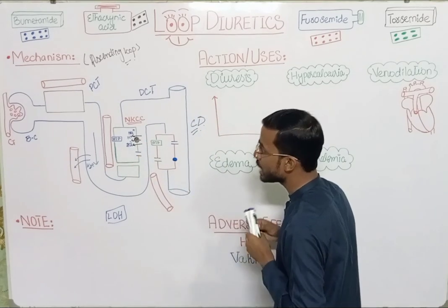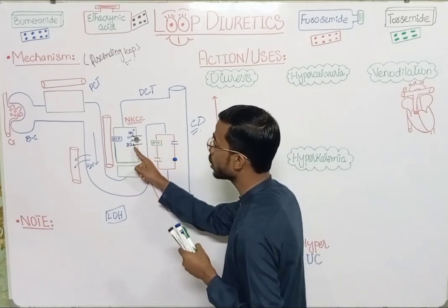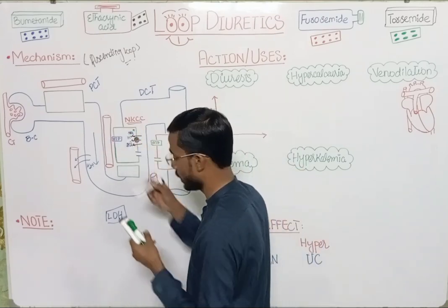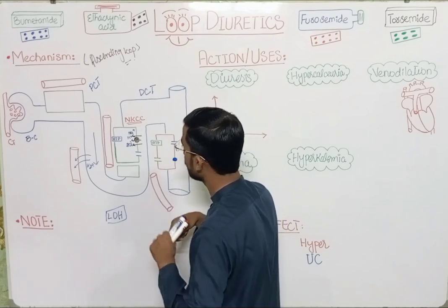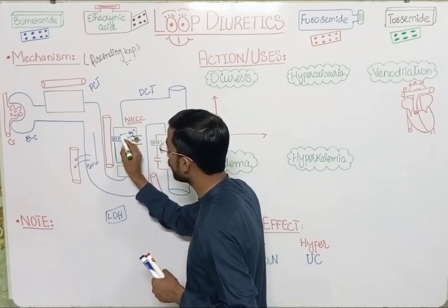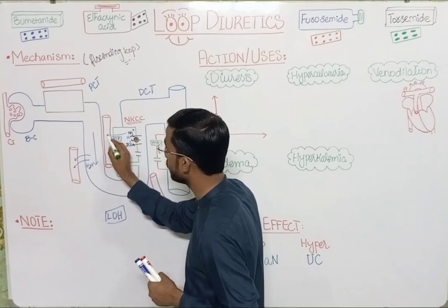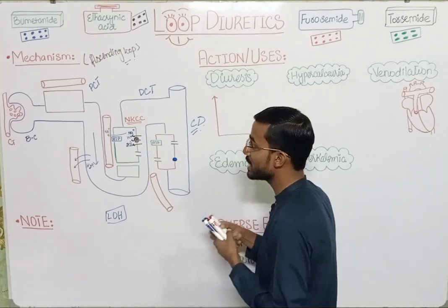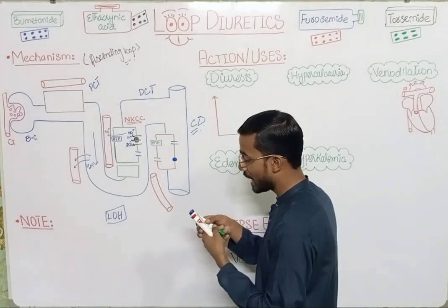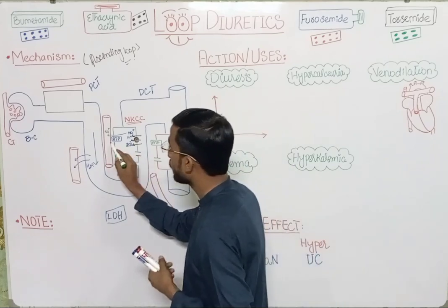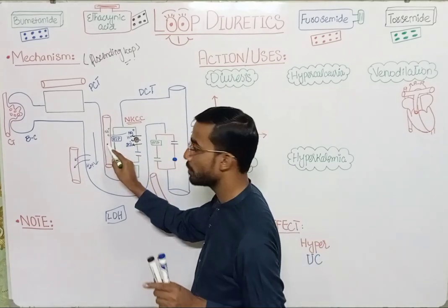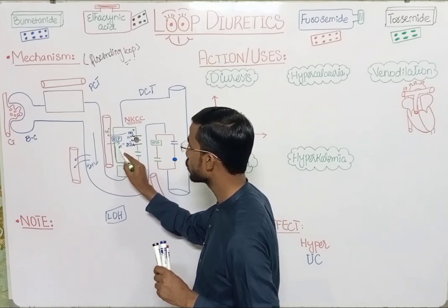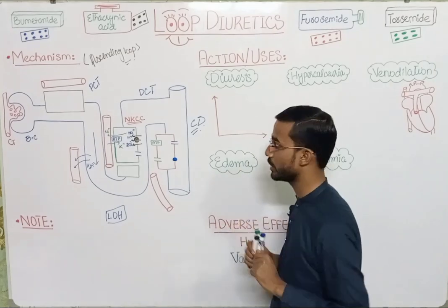These ions will then move into the blood. Potassium in the cell moves first into the interstitial space and then into the blood. Sodium moves out of the cell via the sodium-potassium ATPase pump, and in exchange, potassium from the blood moves into the interstitial space and finally into the cell.